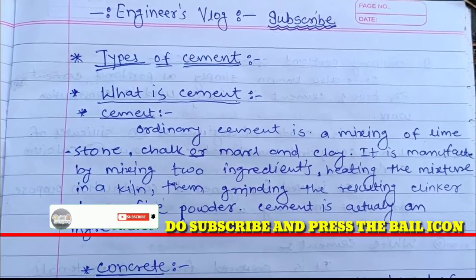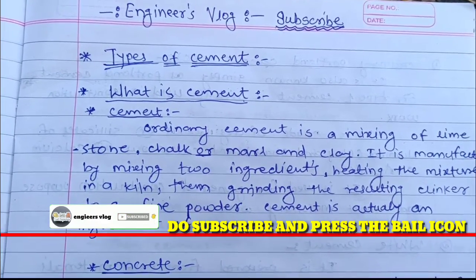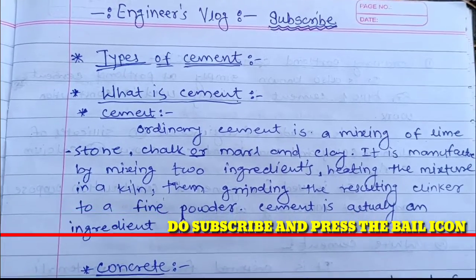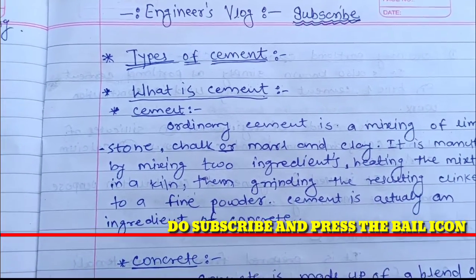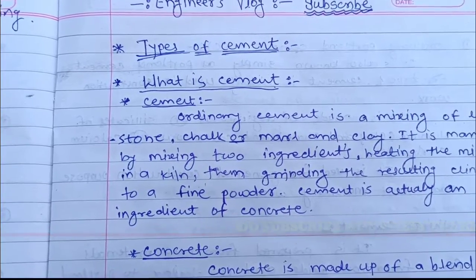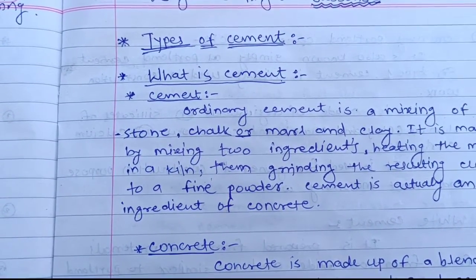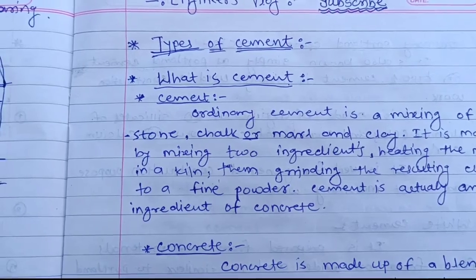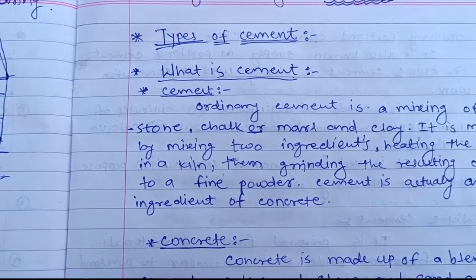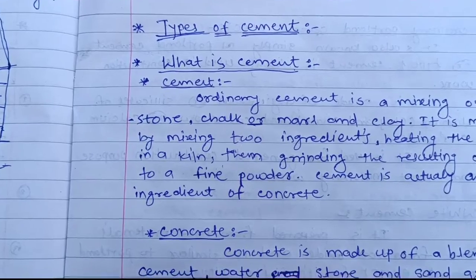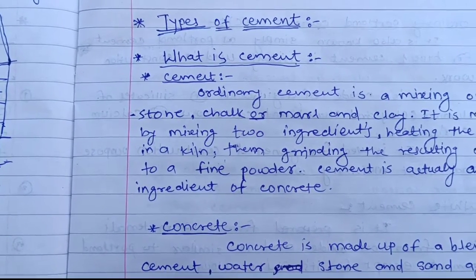Welcome guys. Today we discuss the types of cement. Ordinary cement is a mixture of limestone, chalk or marl, and clay. It is manufactured by mixing these ingredients and heating the mixture in a kiln, then grinding the resulting clinker to a fine powder.